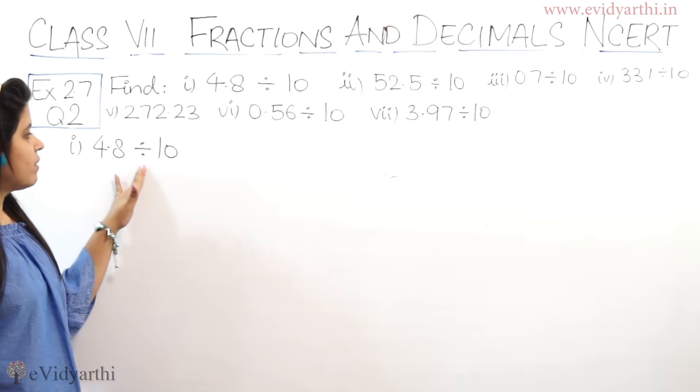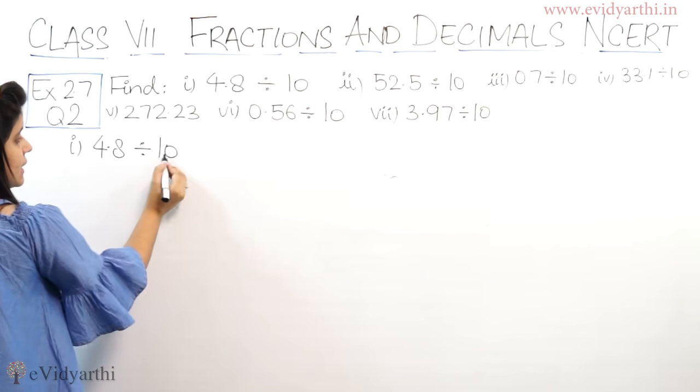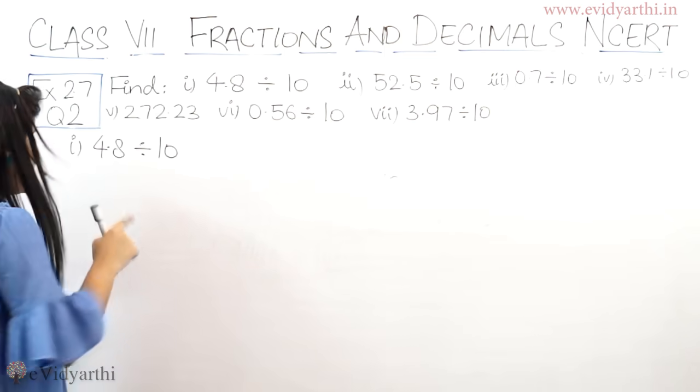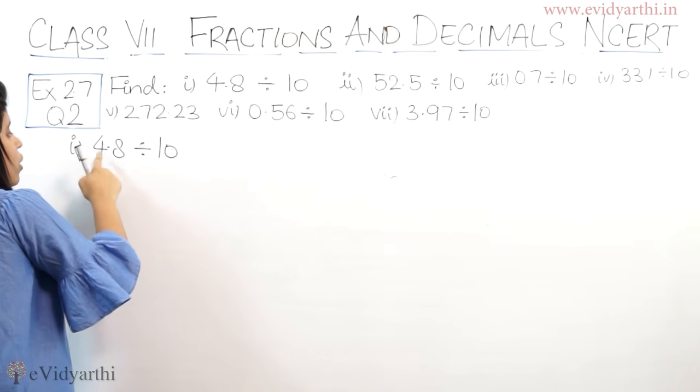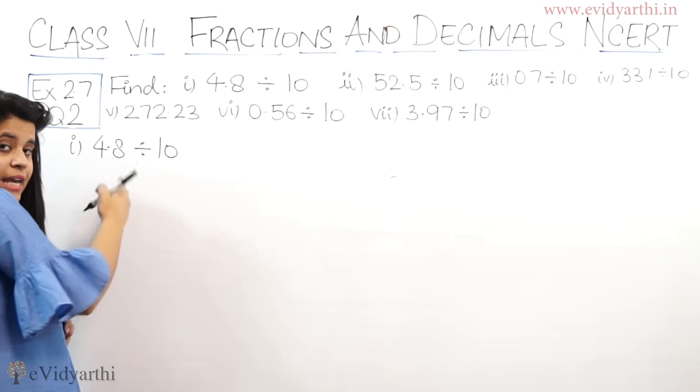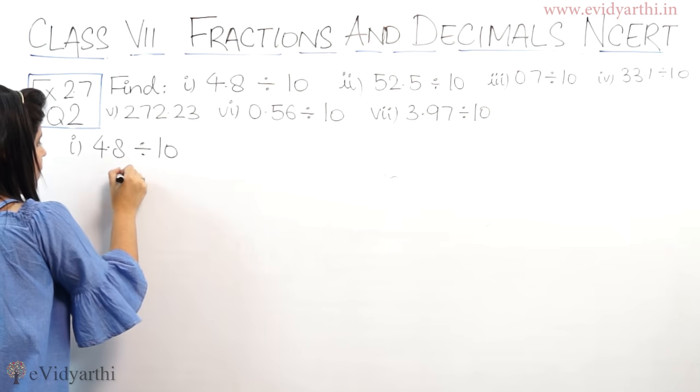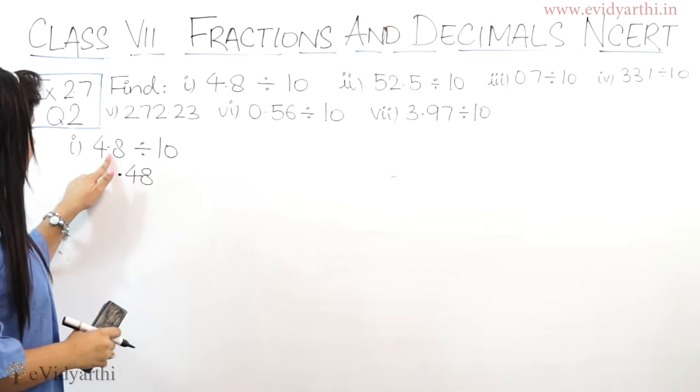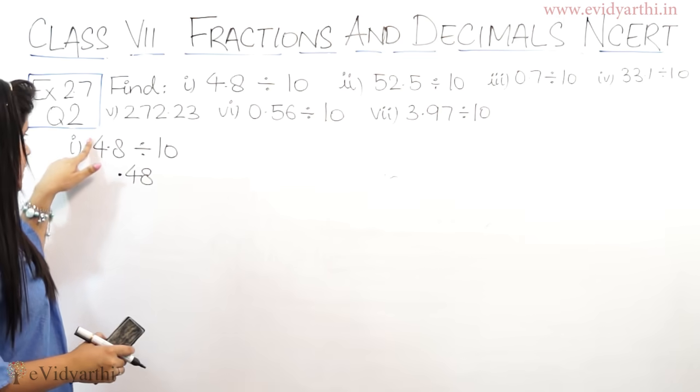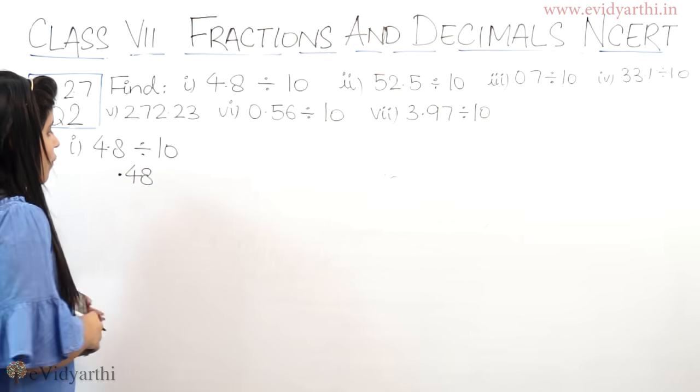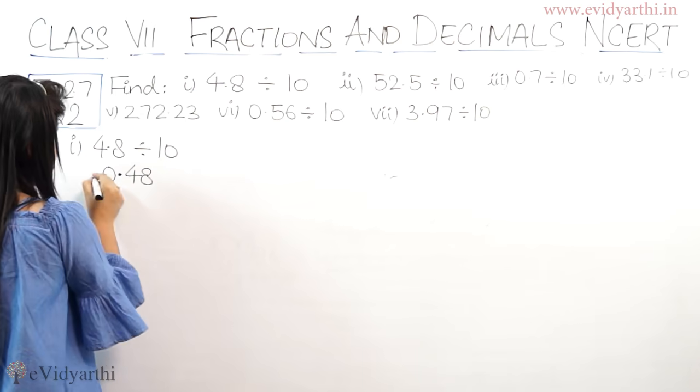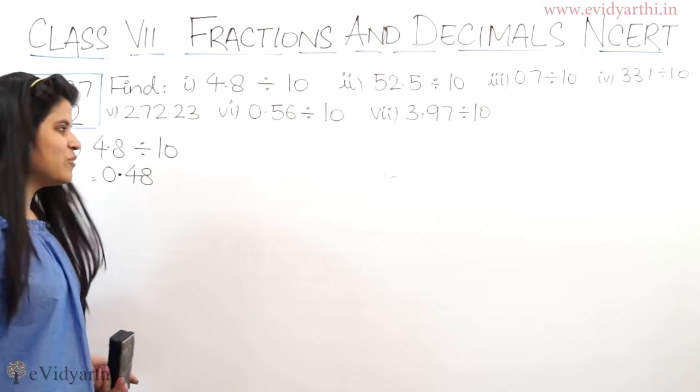Now, 48 divided by 10. Kitni 0 hai? 1, 0. Kitne place pichhe jayega? 1 place yahan pe hai. So aaghe chala jayega, 1 pichhe chala jayega. Yeh ho jaega point 4.8. Kyunki yaha se yeh left hand side pe shift hoga. Yaha chala jayega. So yaha gaya point 4.8 which means 0.48. So the answer is 0.48.